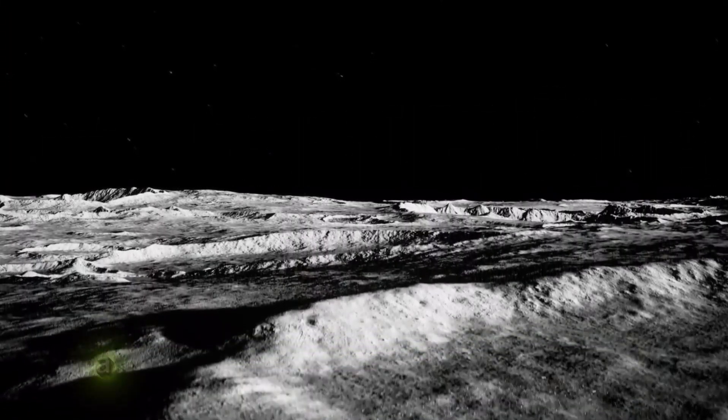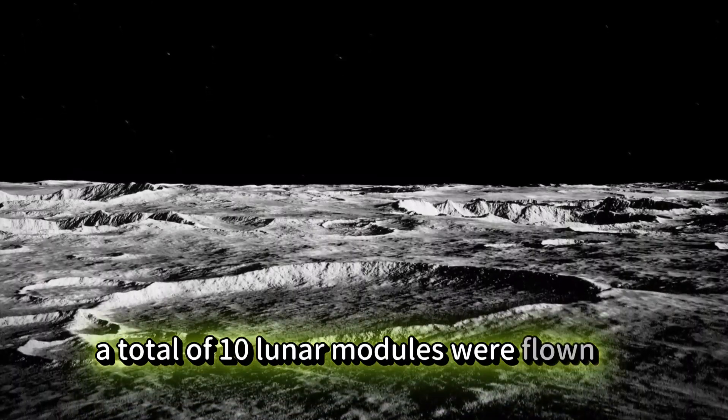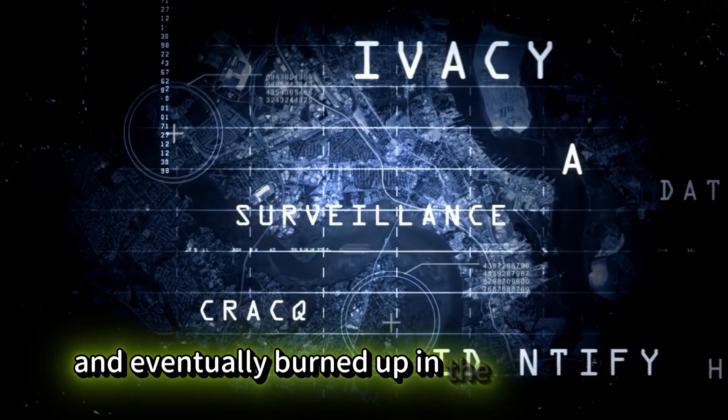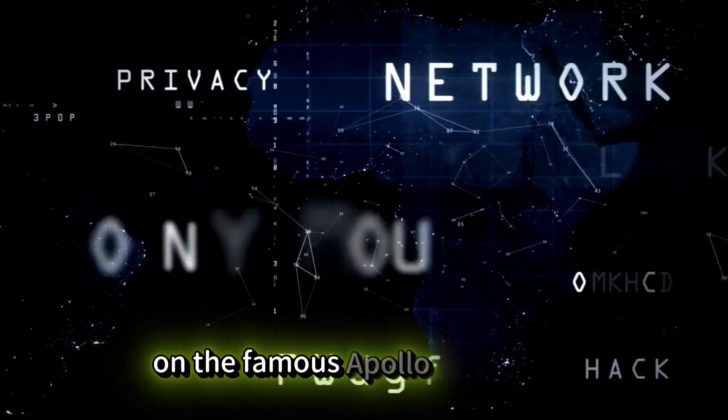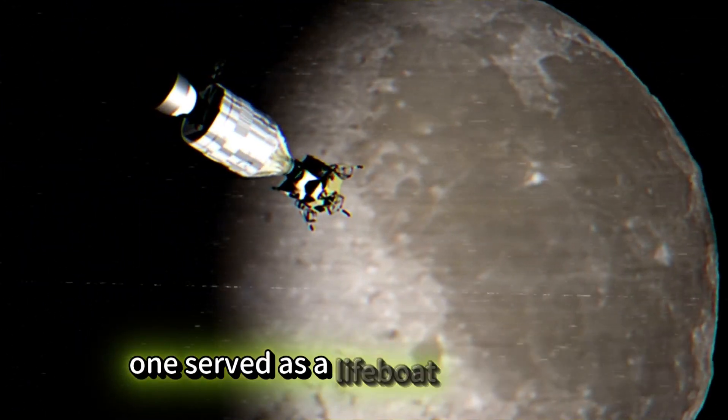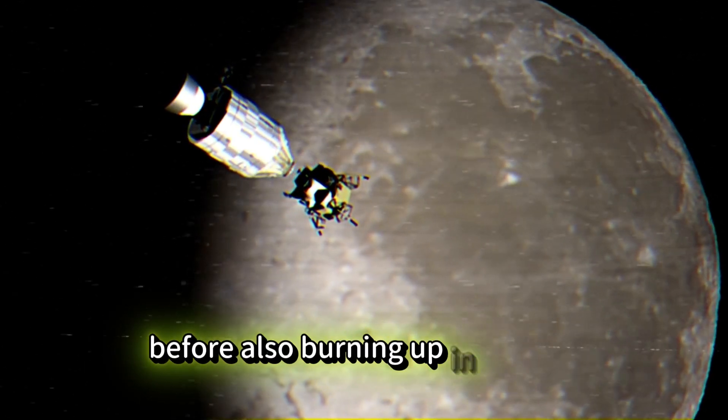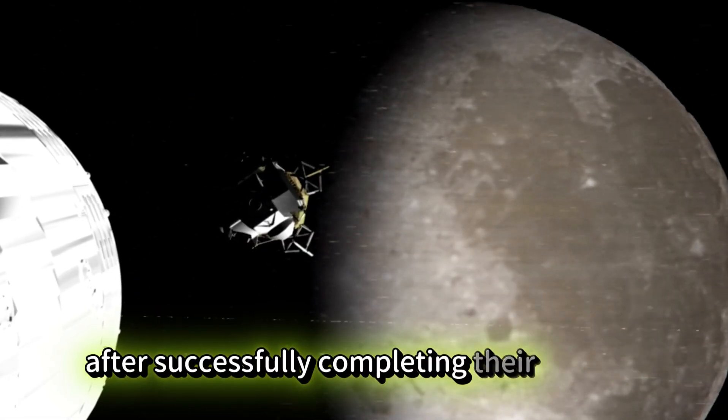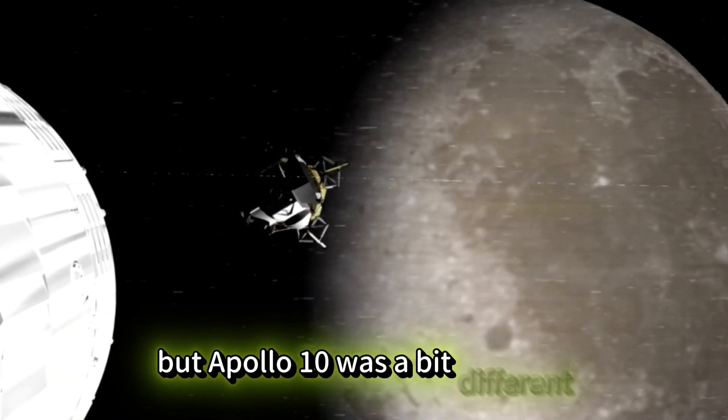Over the course of the Apollo missions, a total of 10 lunar modules were flown in space. Two were used for testing around Earth and eventually burned up in the atmosphere. On the famous Apollo 13 mission, one served as a lifeboat for the crew before also burning up in Earth's atmosphere. The rest were purposefully crashed into the moon after successfully completing their mission, but Apollo 10 was a bit different.